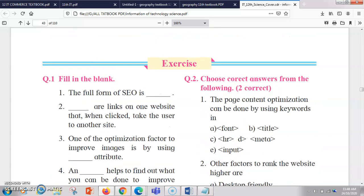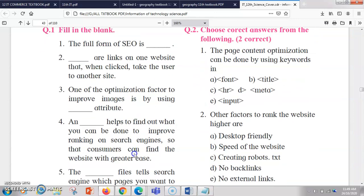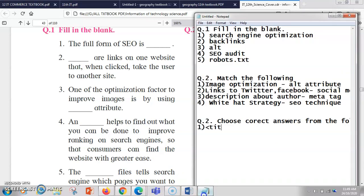Now let's go further. Choose any two correct answers from the following. Okay, so we are going to find out here. So the first one is MCQs with two correct options. The page content optimization can be done by using keywords in blank. So basically it can be done by using keywords like title and meta. So the answer is title comma meta.